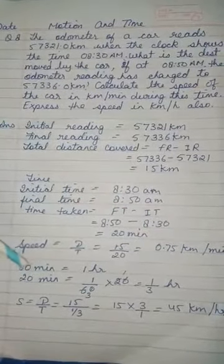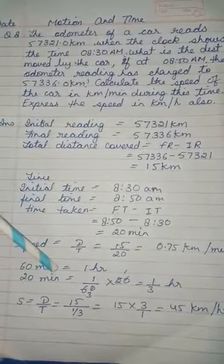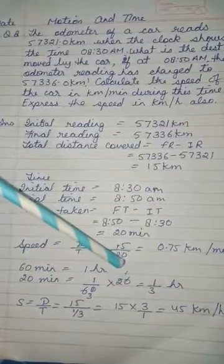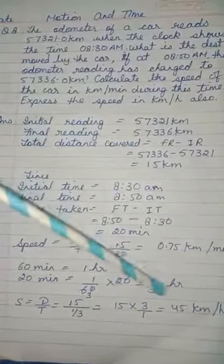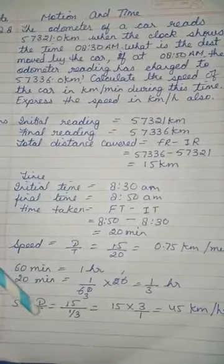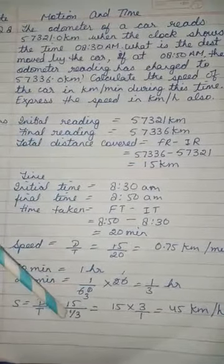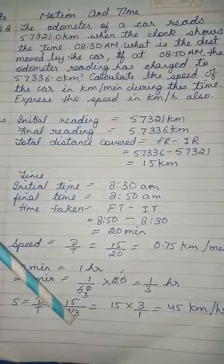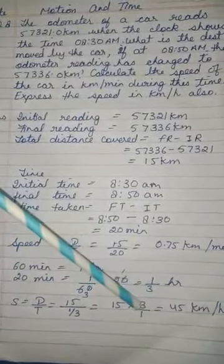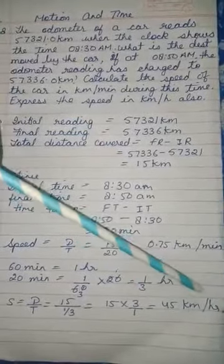We know that 60 minutes equals 1 hour, so 20 minutes equals 1/60 multiplied by 20, which gives 1/3 hour. Speed equals distance upon time: distance is 15 kilometers and time converted to hours is 1/3. Calculating gives 15 multiplied by 3 upon 1, which equals 45 kilometers per hour.